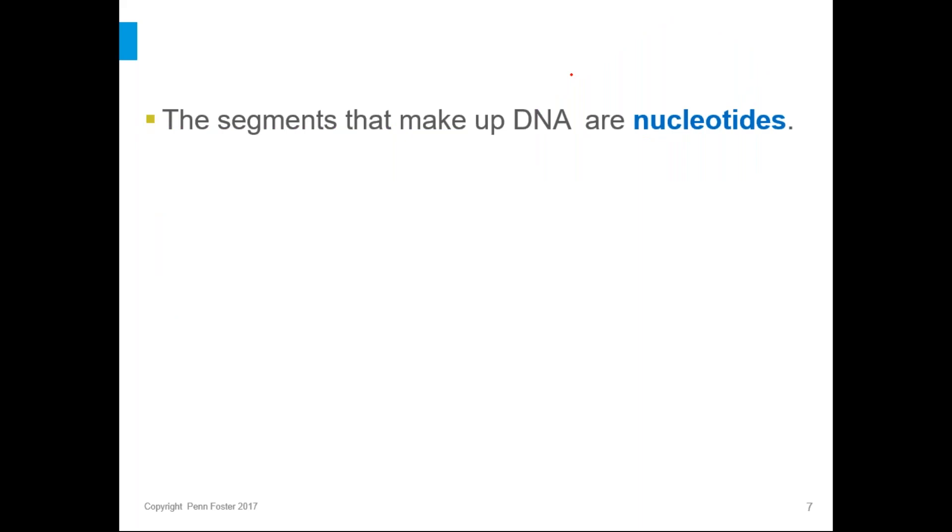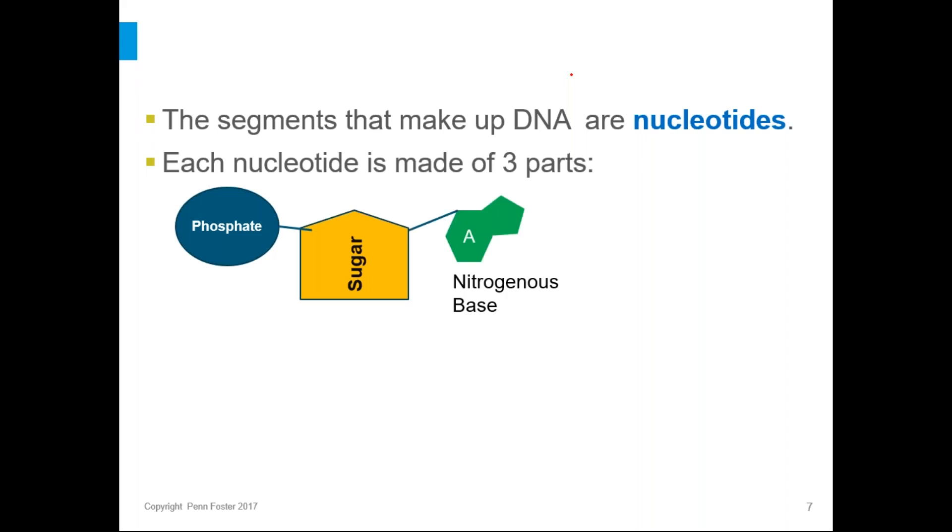So I've been saying segments, but the word that we use for these is nucleotides. Those are the little chunks that make up DNA. There's millions of these in a row hooked together. Each nucleotide is made up of three parts: a phosphate group, a sugar, and a nitrogenous base.